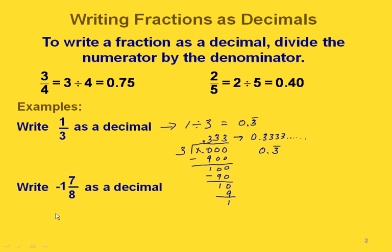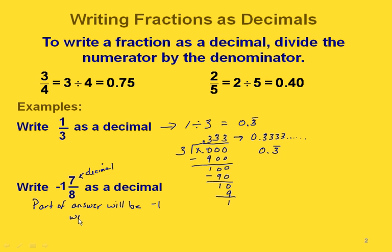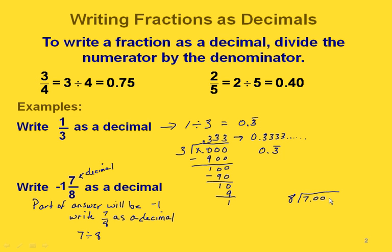Now if we're writing negative 1 and 7 eighths as a decimal, we already have our whole number part as negative 1, so we don't need to do anything to change that. Part of our answer will be negative 1. What we need to do is take the 7 eighths and figure out the decimal equivalent for that. That means we're dividing 7 by 8. Since 8 is bigger than 7, we want values after the decimal point, so we're going to add a decimal point and some zeros.